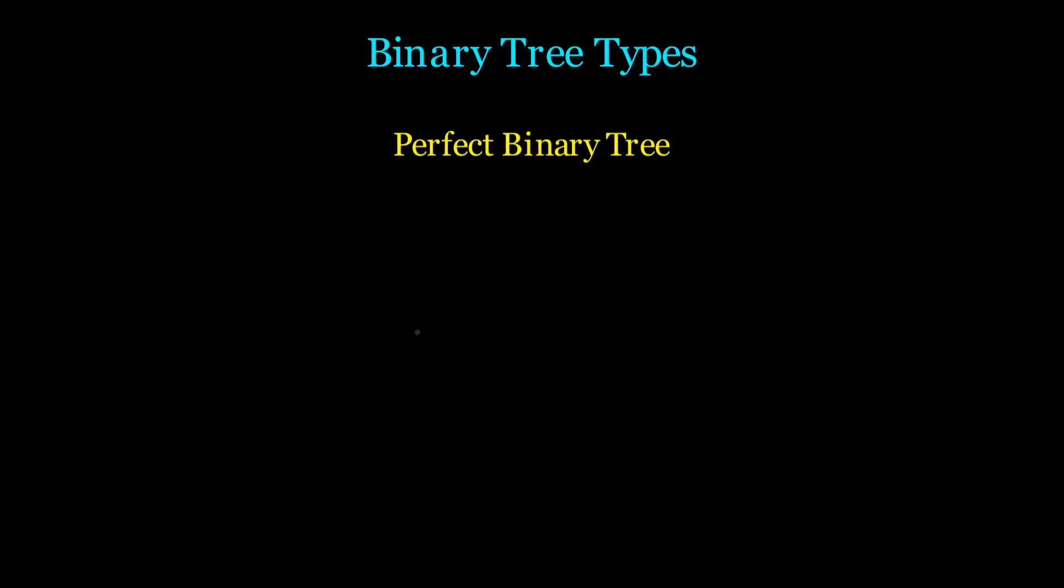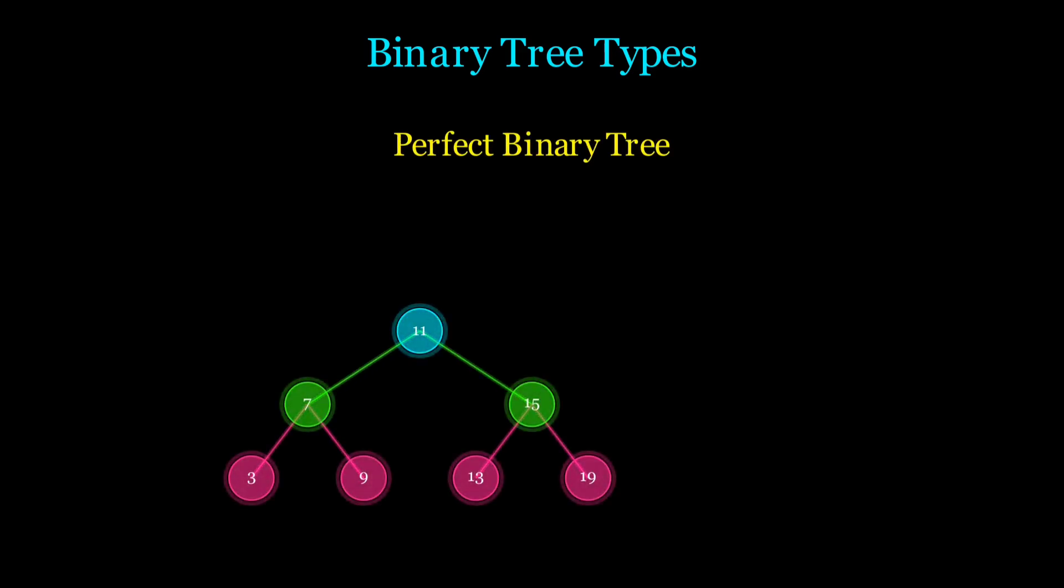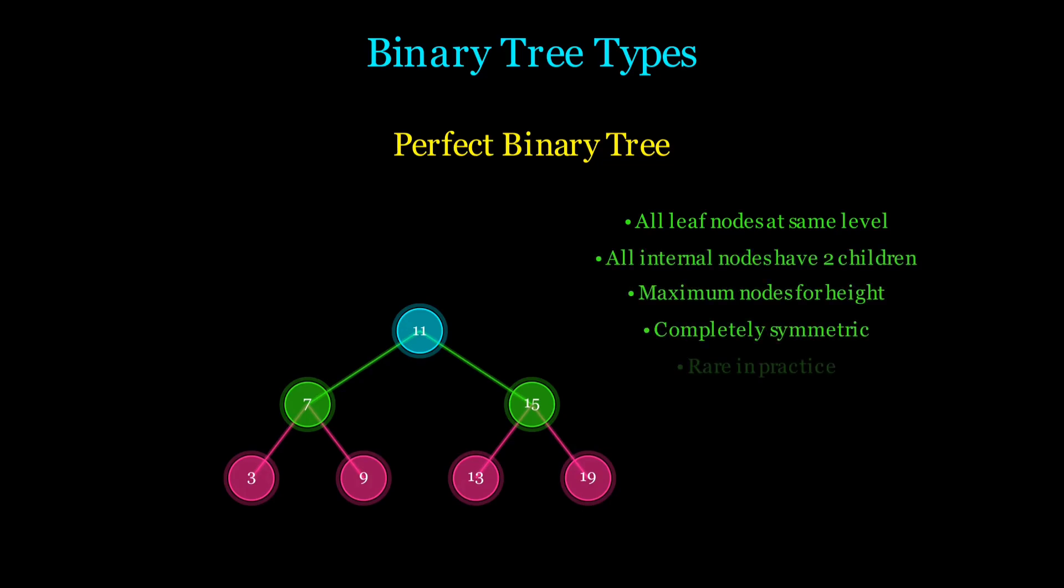Finally, we have the perfect binary tree. This is a tree where all leaf nodes are at the same level and every internal node has exactly two children.